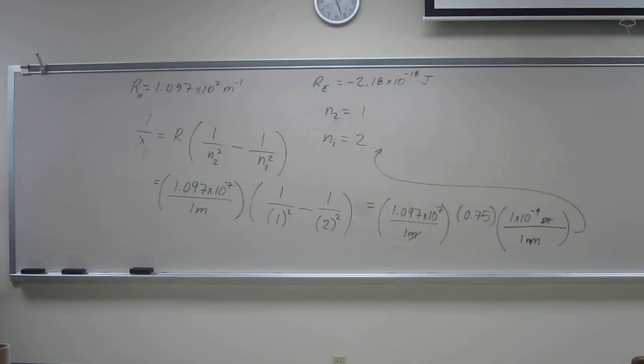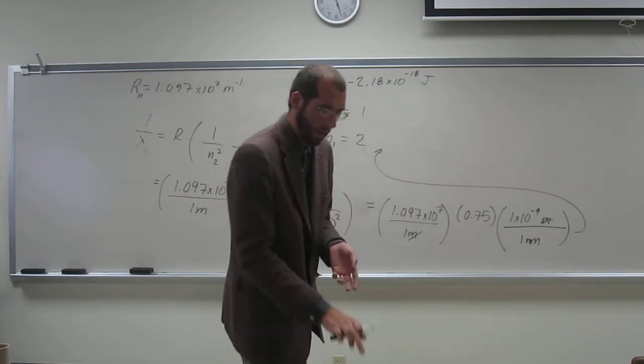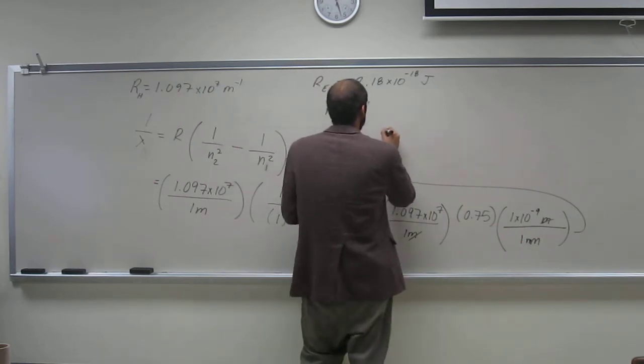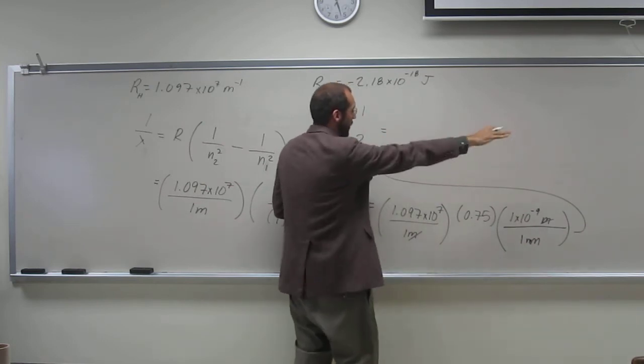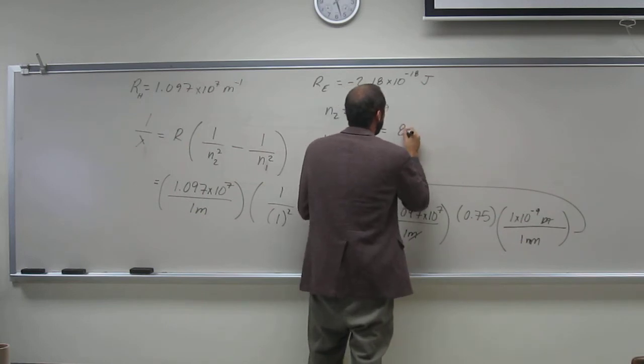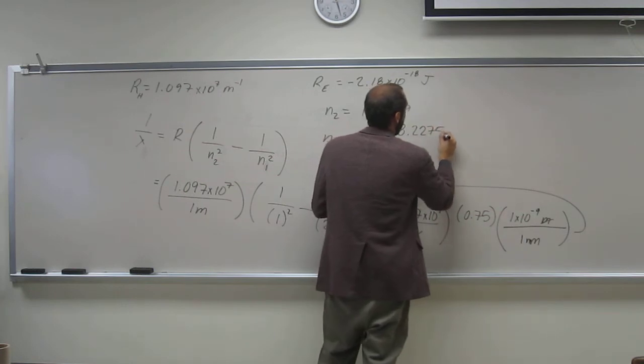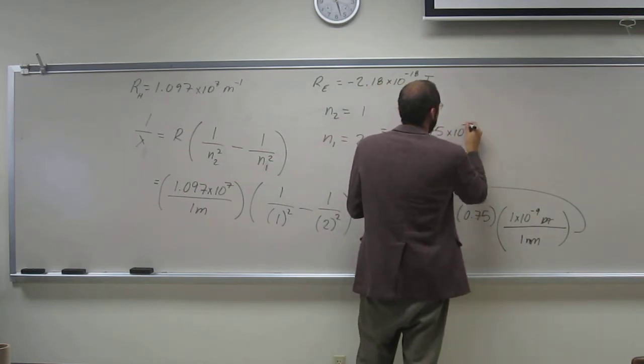So what do we got? 1.097 times 10^7, times the conversion to nanometers, times 0.75. Okay, so I got this answer. And I'll take it out to a number of digits, because really there's no significant figures in this one. But 8.2275 times 10 to the negative 3.